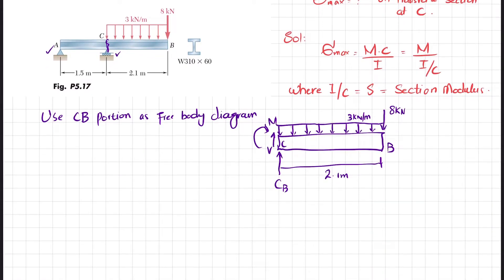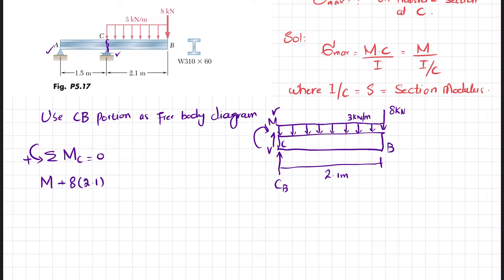Taking the sum of all moments about point C equal to zero, with counterclockwise as positive, in order to find the moment at C. At point C we have moment M, which is counterclockwise. The 8 kN load has a perpendicular distance of 2.1 meters, producing a clockwise moment, so it is negative.